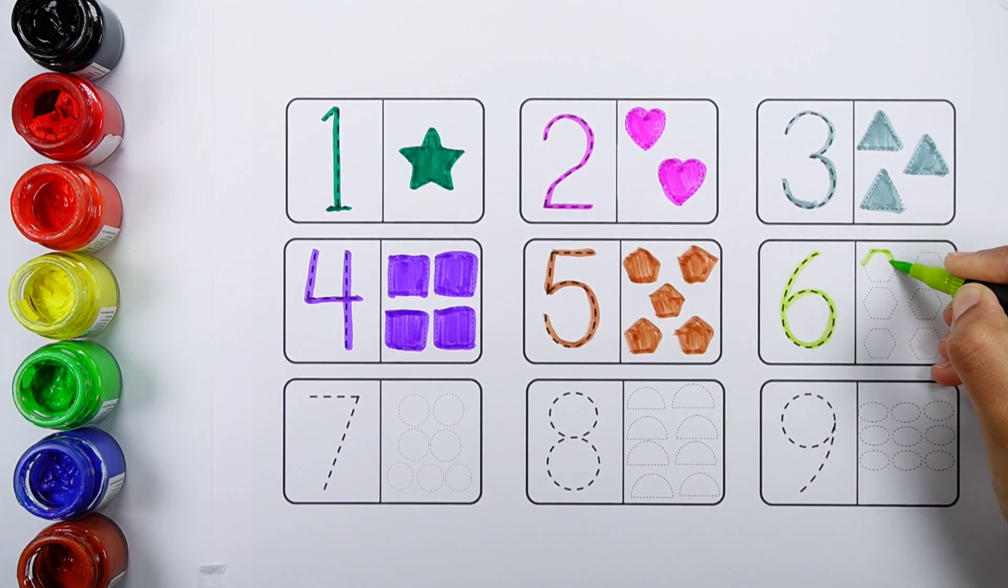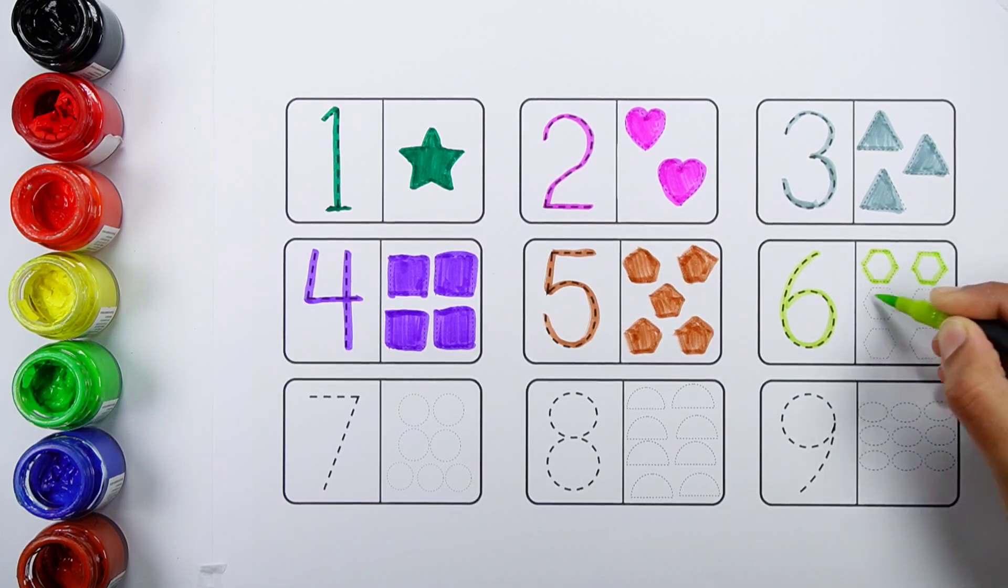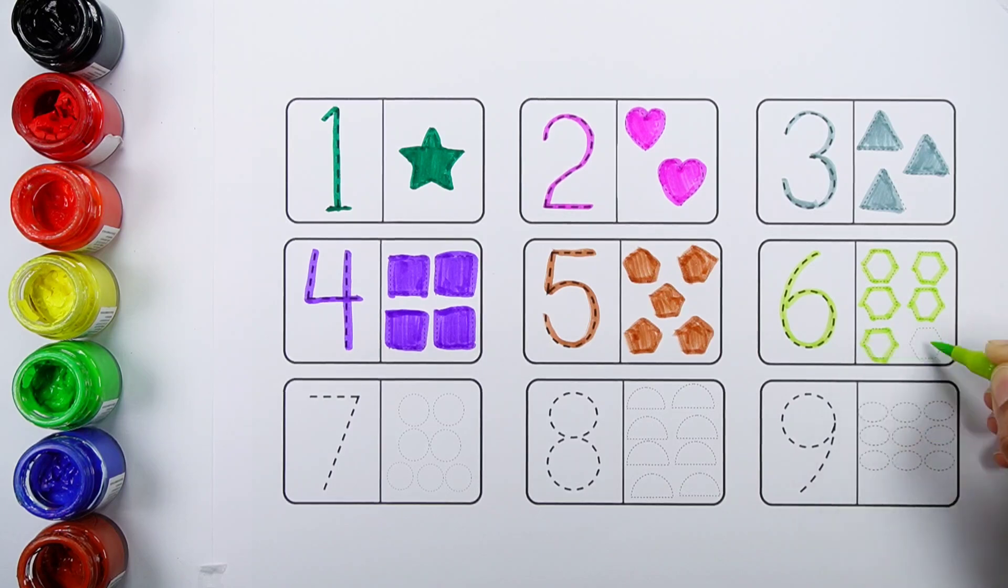Number six. One, two, three, four, five, six. Six hexagons.